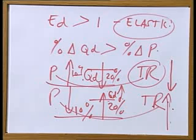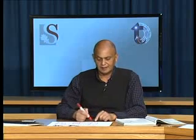An important point to remember here is that when the demand for a product is elastic, the price and total revenue move in opposite directions. This is a key factor to remember: when the demand is elastic, price and total revenue move in opposite directions.